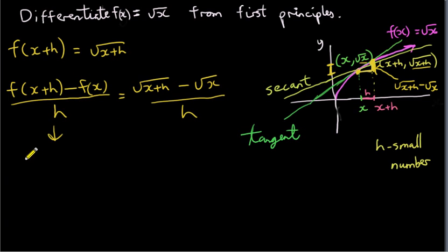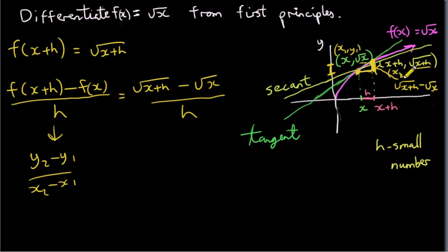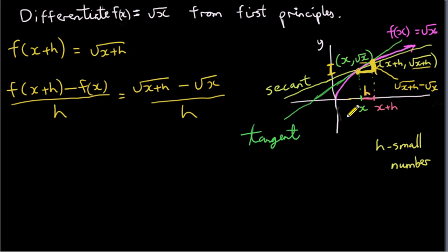This formula is just the slope of a line: y2 minus y1 over x2 minus x1, where x1, y1 is the first point and x2, y2 is the second point. The horizontal distance here is h, which is x2 minus x1, or x plus h minus x. So really, this is just the slope of a line passing through two points — the point we're interested in at x on our curve, and the point a horizontal distance h away. This is the slope of the secant.